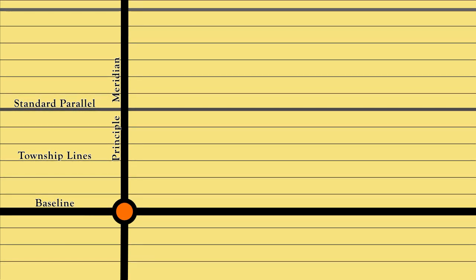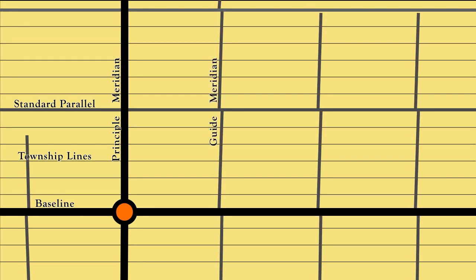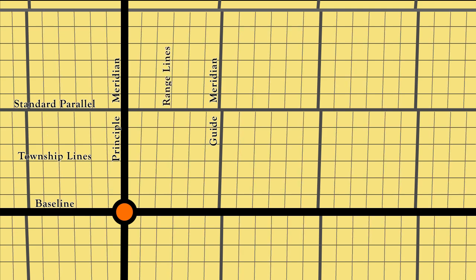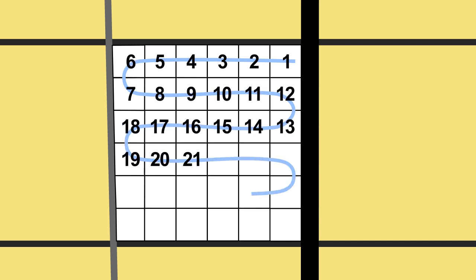One problem with the public land survey system is that it is a square grid system laid on a round surface, so adjustments have to be made. Guide meridians run parallel to the principal meridian at roughly 30-mile or 24-mile intervals. The range lines run parallel to the principal meridian and are about 6 miles apart. With township and range lines in place, we are ready to draw in our sections. However, the 6-mile squares aren't perfectly square. Within the township, adjustments are made by starting the sectional survey in the southeast corner and moving progressively towards the northwest corner, meaning the northern and westernmost sections are not a full square mile. Sections are numbered in rows starting from the northeast corner and running back and forth to end in the southeast corner.